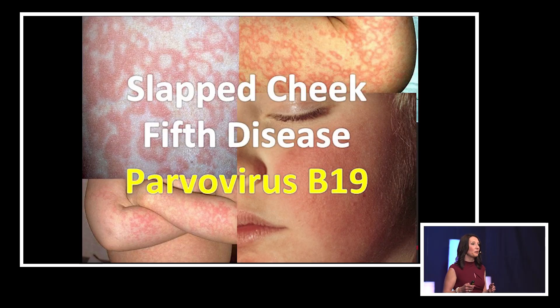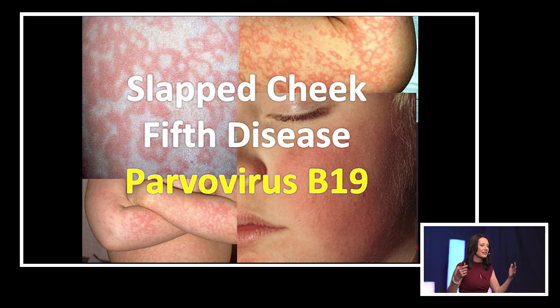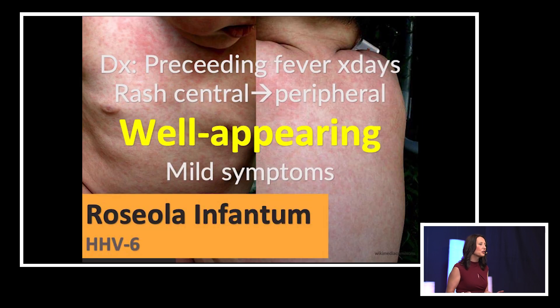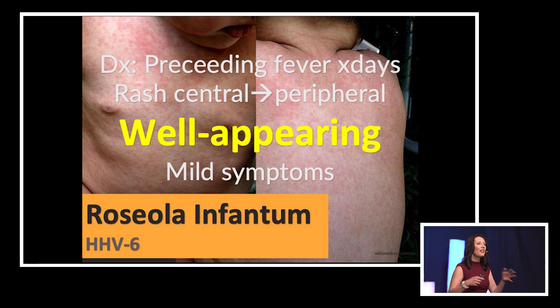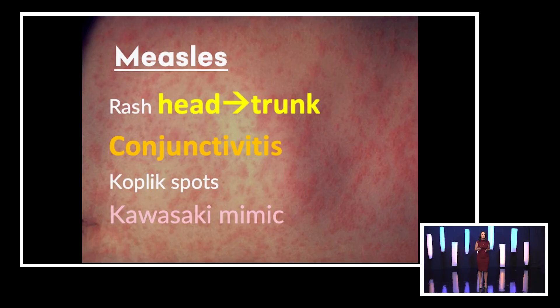There are some rashes with characteristic features, like parvovirus with the slapped cheek presentation. Or we may see a child who had a fever for a few days, is pretty well-appearing, with no clear source, and then erupts in a rash — that's roseola.